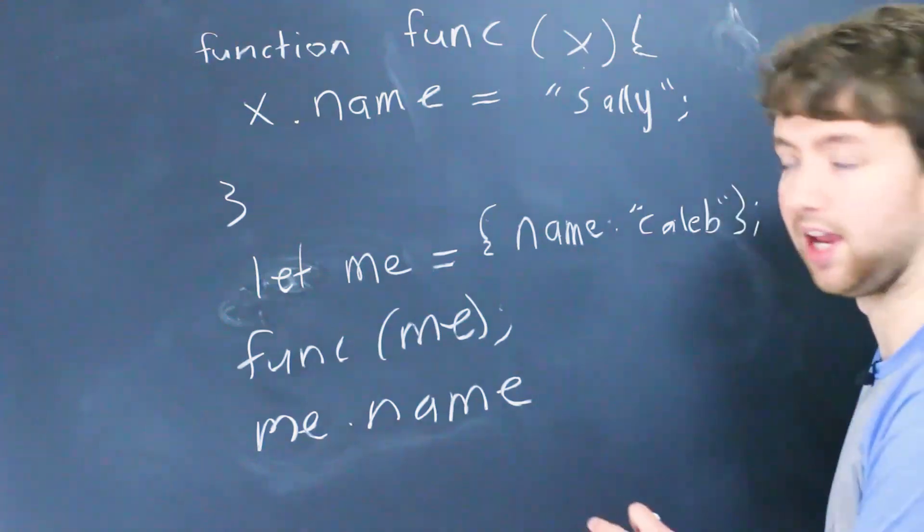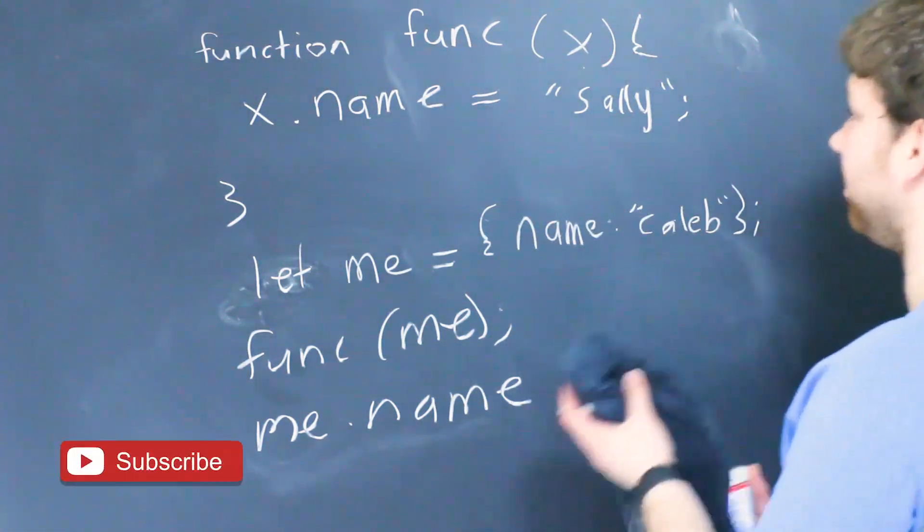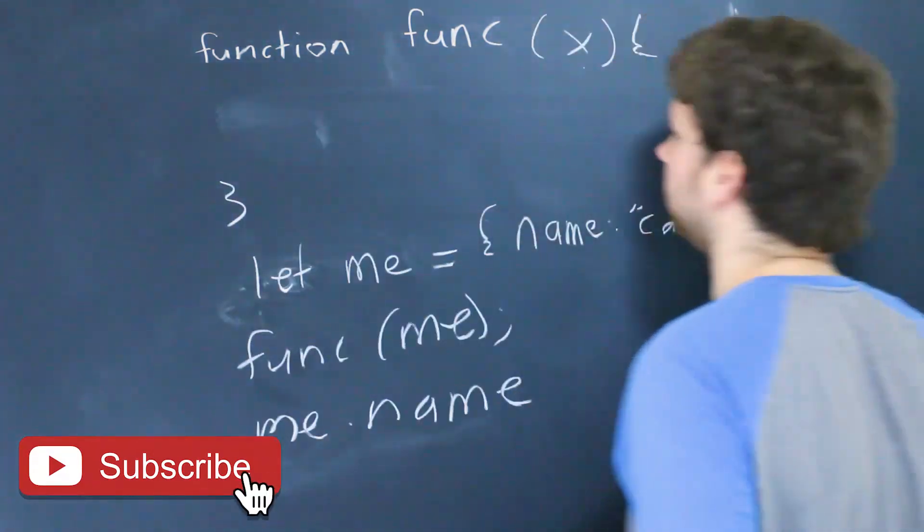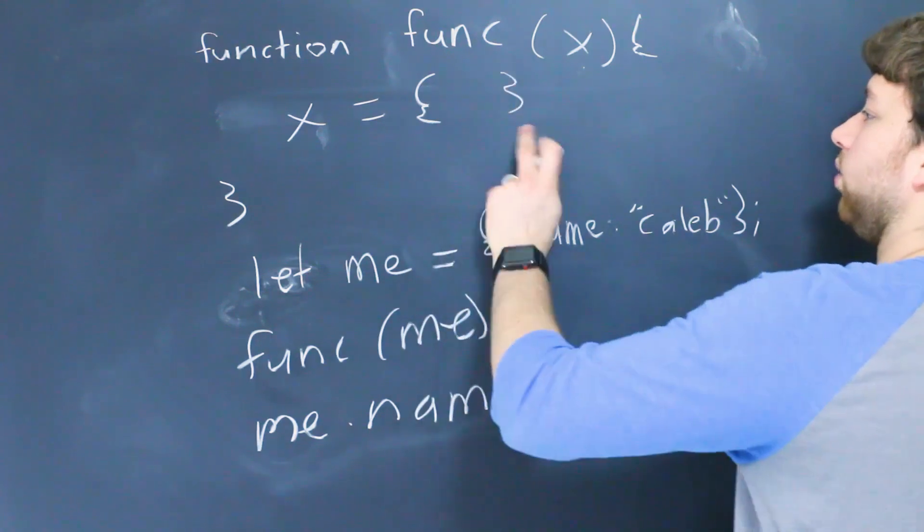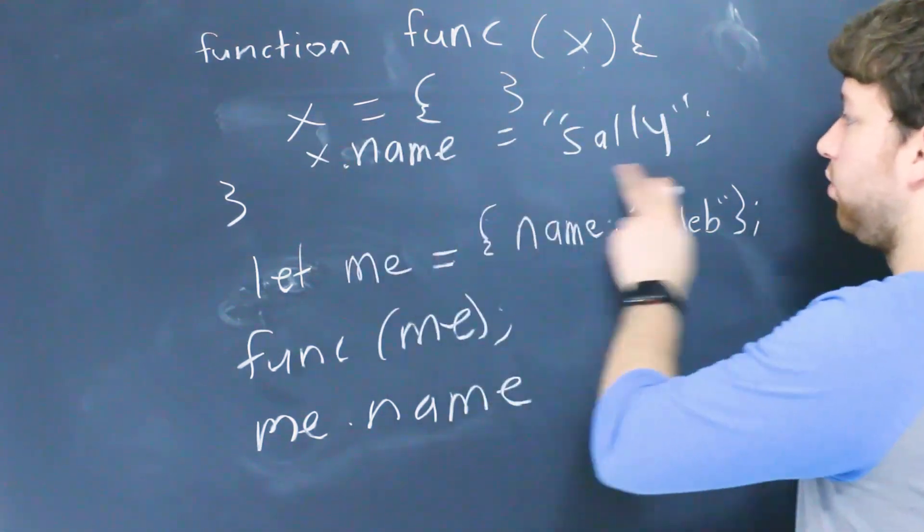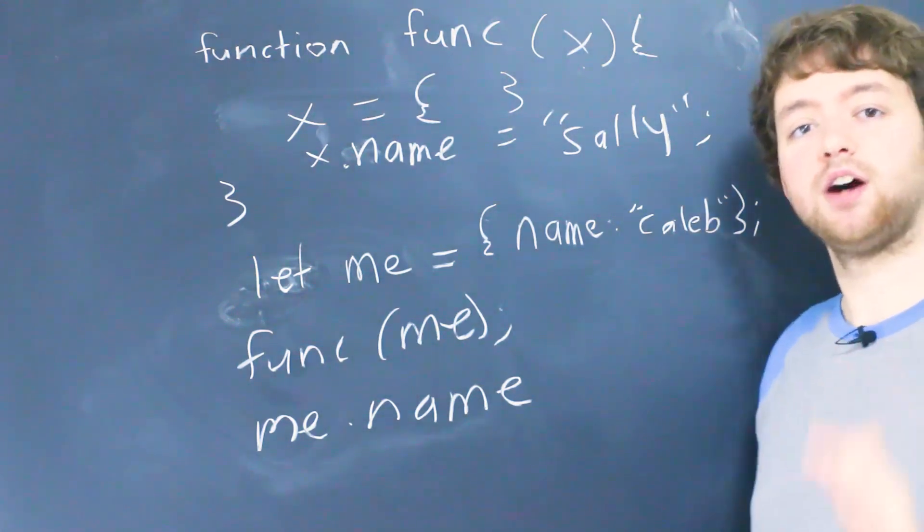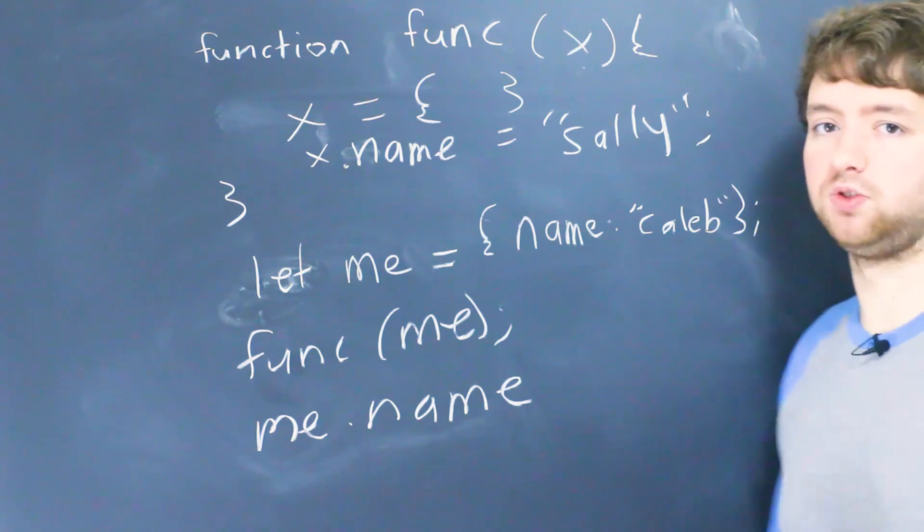But if instead we did this and reassigned X to a new object and we made a property on this name equal to Sally this is not going to exist down here so me.name down here is still going to be Caleb.